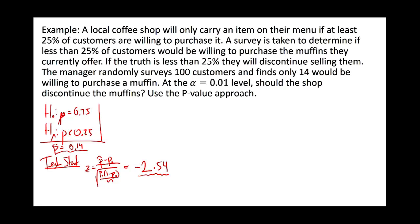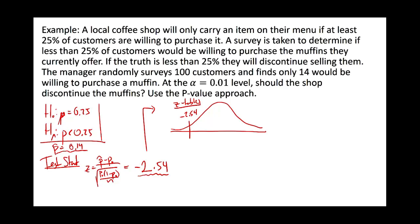They're claiming 25%, but our sample showed only 14% — that's 2.54 standard deviations below what you'd expect to see if they were telling the truth. We can quantify that: take the test statistic to the z-table, look up negative 2.54, and the probability right there is 0.0055.